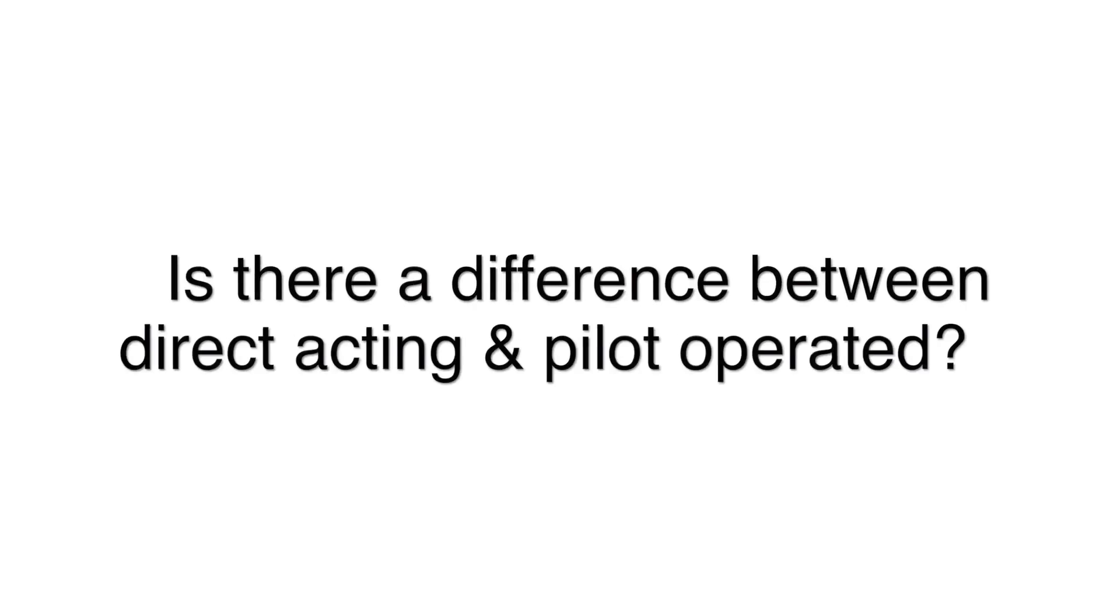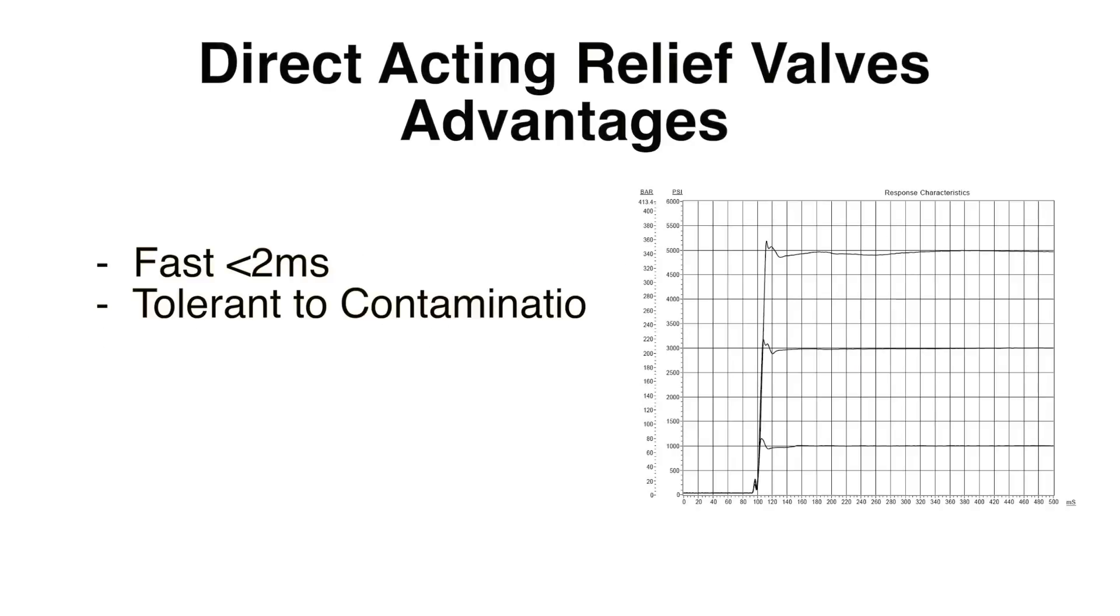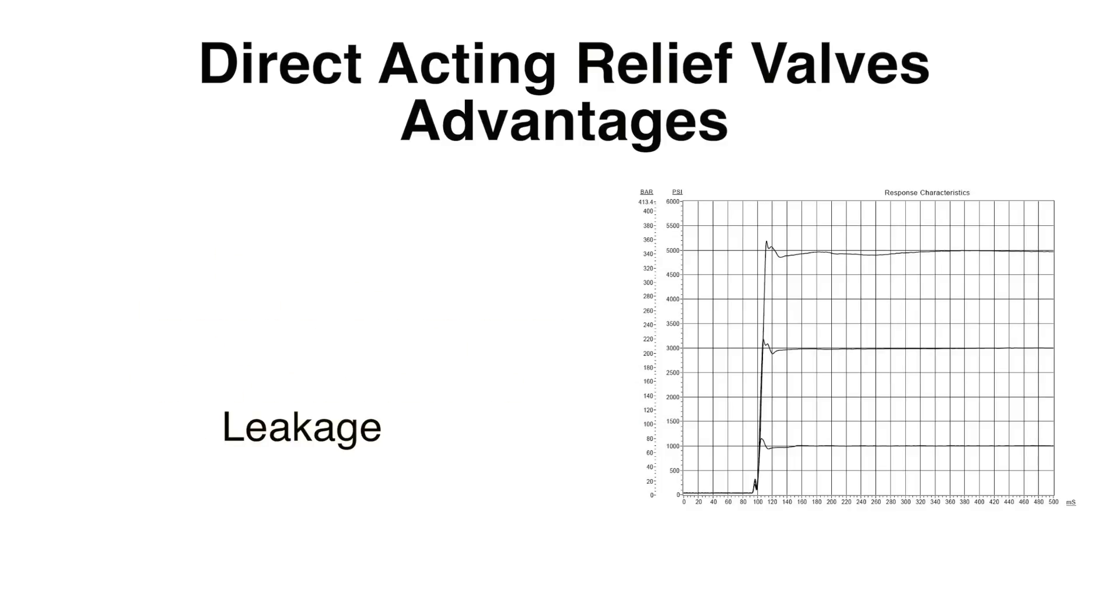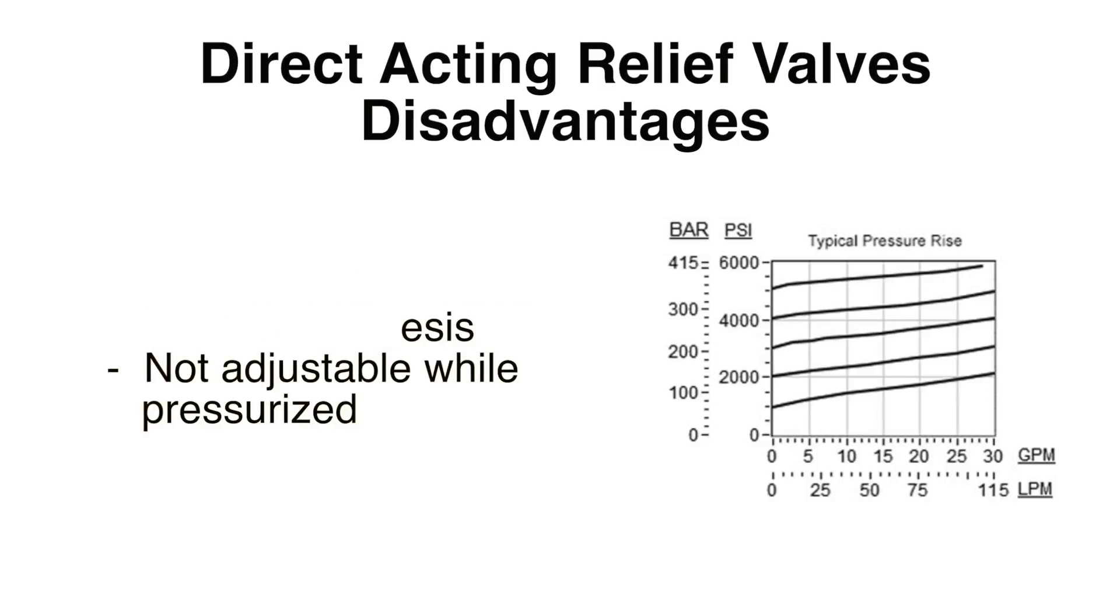Why the difference? There are advantages and disadvantages to each type. Direct acting valves are very fast, responding in sub-2 milliseconds. They're also tolerant to contamination and exhibit very low leakage rates. However, there are some challenges: they have high override pressure, higher hysteresis, and are not adjustable while pressurized.